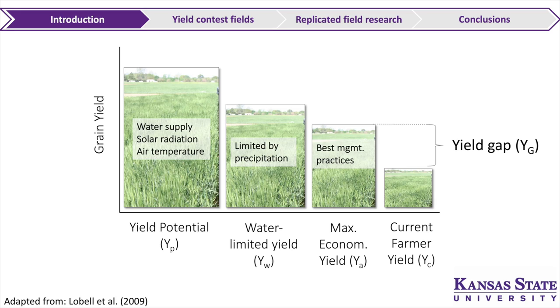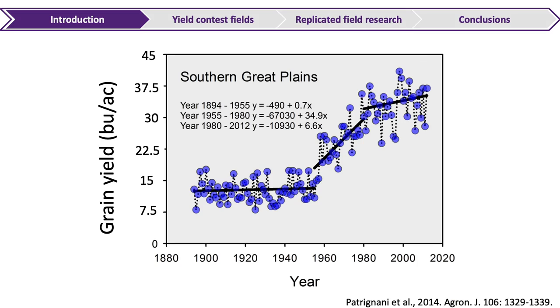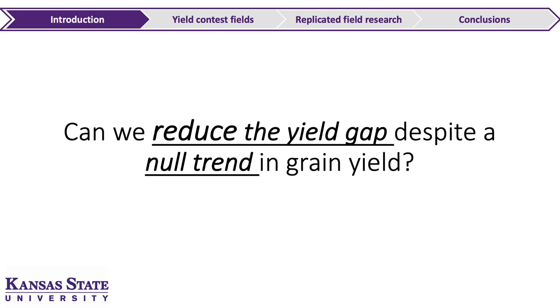If we look at the southern Great Plains farmer yield over the years, we see a steep increase in grain yields in the 60s through 80s — semi-dwarf varieties and the advent of nitrogen fertilizer — but really since then it's been fairly stable. From the 1980s forward, average yield has been kind of stable. The question is: can we increase this yield or reduce the gap between our farmers and where they should be economically?